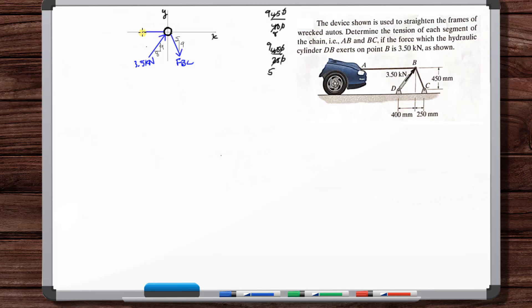So again, we know this direction because this is a cable or a chain. And it should be pulling to the left. So this is F_AB. We got a free-body diagram we can apply all of our equations of equilibrium to.